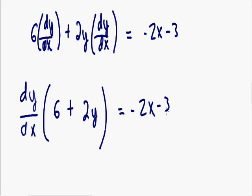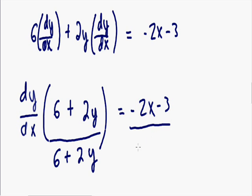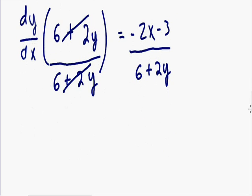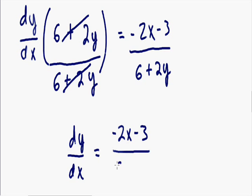We're trying to get dy/dx by itself, so we need to get rid of the (6 plus 2y). To do that, we divide both sides by (6 plus 2y). On the left hand side, (6 plus 2y) cancels out, leaving dy/dx by itself. On the right hand side, we have negative 2x minus 3, all over 6 plus 2y. We have now completely taken the derivative using implicit differentiation.